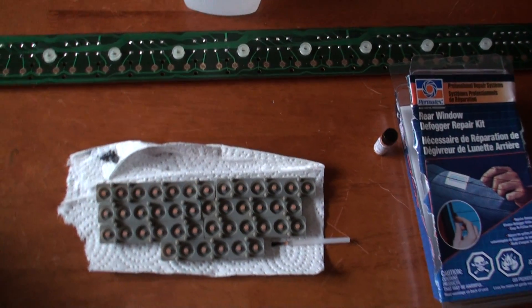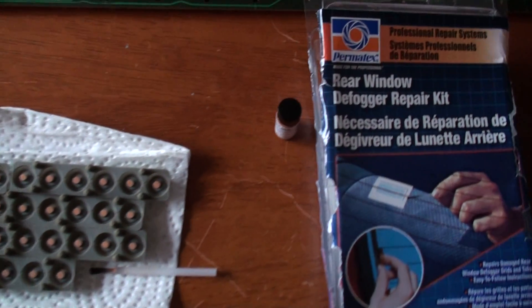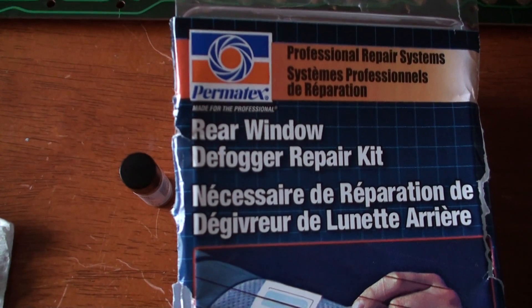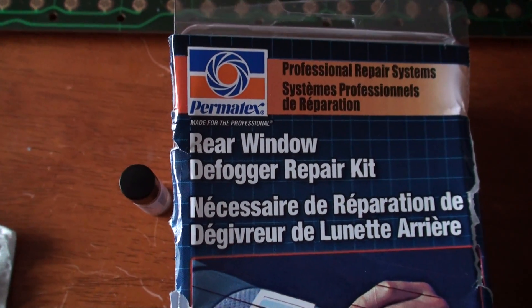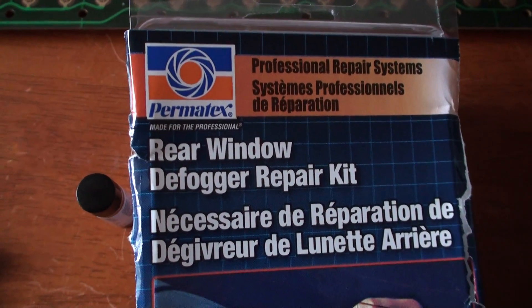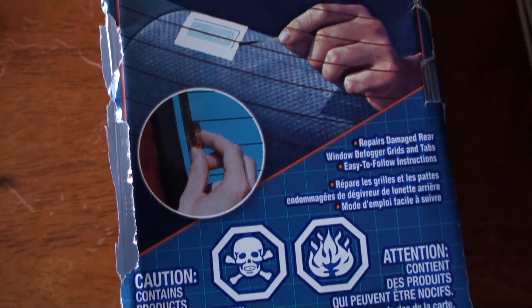Welcome back. Now we're looking at the third alternative, which is to use a rear window defogger repair kit. This is a Permatex one. The one I had before was a Loctite, but it had been sitting in my toolbox for several years and looked like it had gone bad.